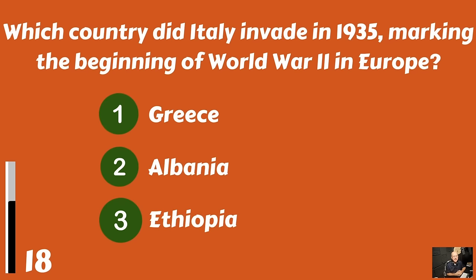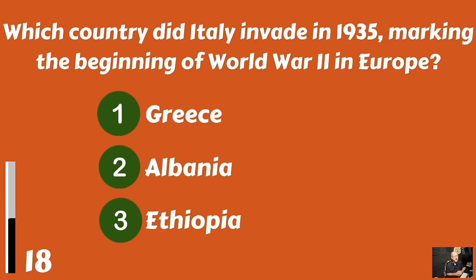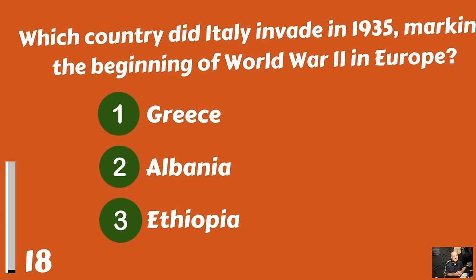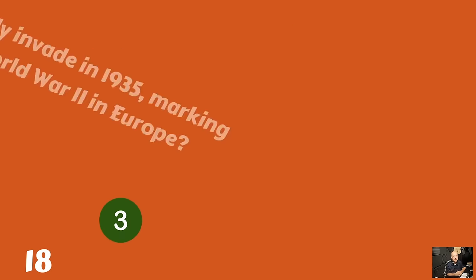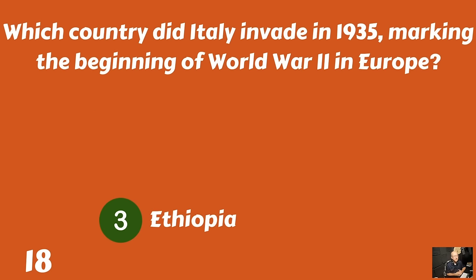Which country did Italy invade in 1935, marking the beginning of World War II in Europe? Greece? Albania? Or Ethiopia? Italy invaded Ethiopia.